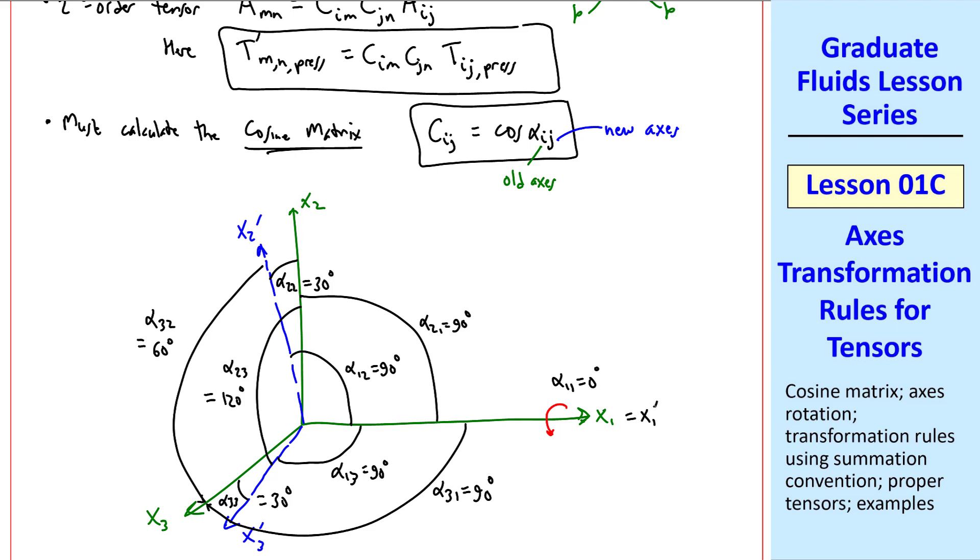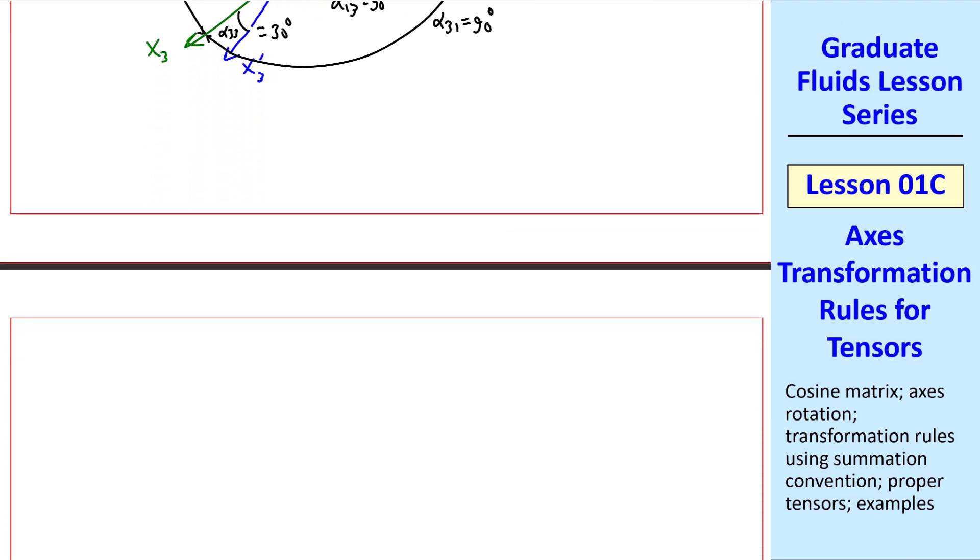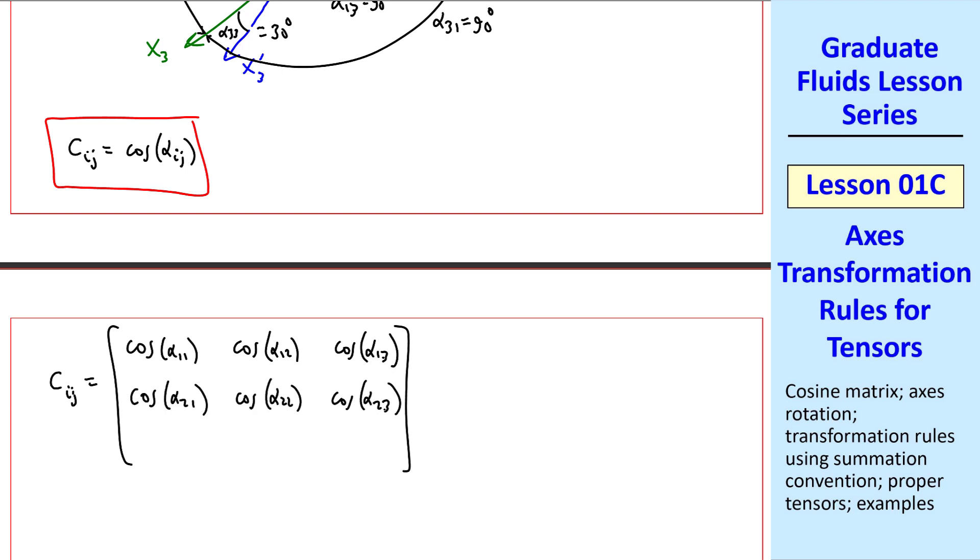Now that we have all these angles, we can calculate the cosine matrix. Cij is cosine of alpha_ij. In matrix form, we write cosine alpha_11, cosine alpha_12, cosine alpha_13 for the first row, and similarly for the second row and the third row. Plugging in all our alphas from the above diagram, we end up with 1, 0, 0; 0, square root of 3 over 2, negative 1 half; 0, 1 half, square root of 3 over 2.